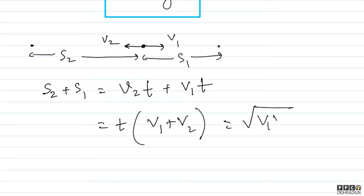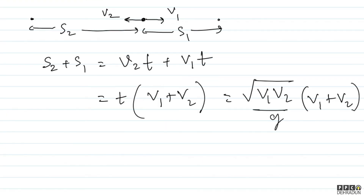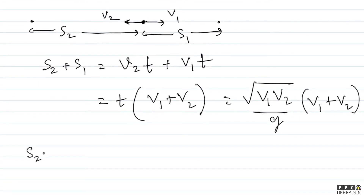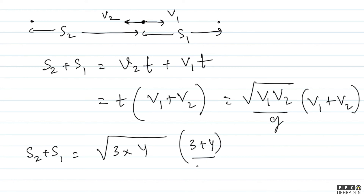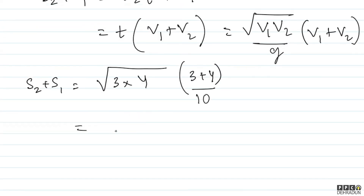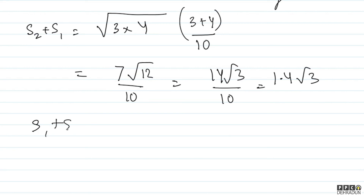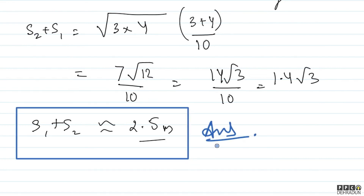We already found t = √(v1v2) / g, so S = (v1 + v2) · √(v1v2) / g. Substituting v1 = 3 m/s, v2 = 4 m/s, and g ≈ 10 m/s²: S = (3 + 4) · √(3 × 4) / 10 = 7√12 / 10 = 7 × 2√3 / 10 = 14√3 / 10 = 1.4√3 ≈ 2.5 meters.